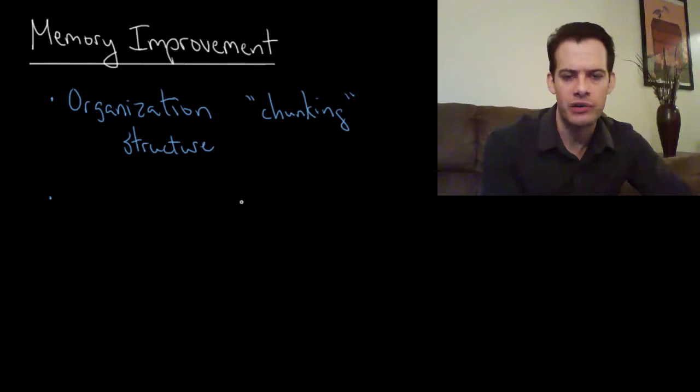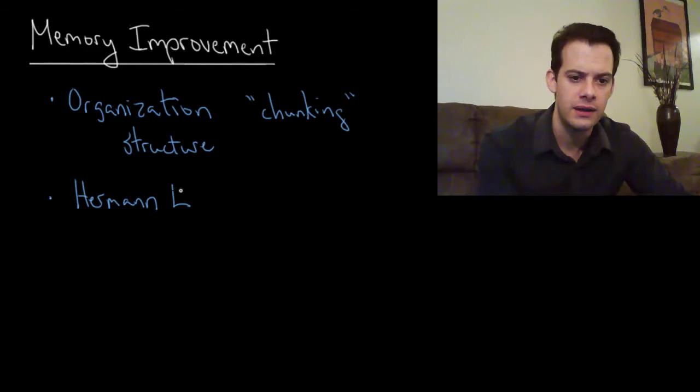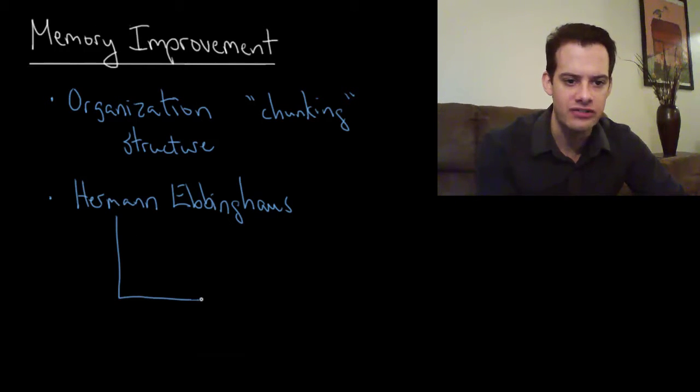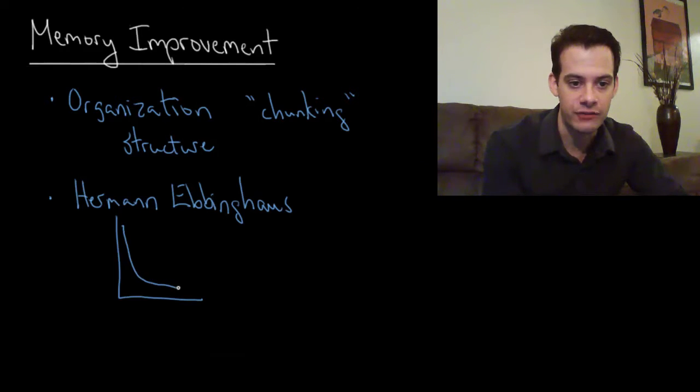Now I want to return to some ideas from Hermann Ebbinghaus who I talked about in a previous video. The thing that we looked at for Ebbinghaus was the idea of the forgetting curve. Ebbinghaus tested himself using random syllables. He tried to remember lists of them and found that his recall was really good immediately after he studied the list, but it dropped very quickly and then sort of leveled off.